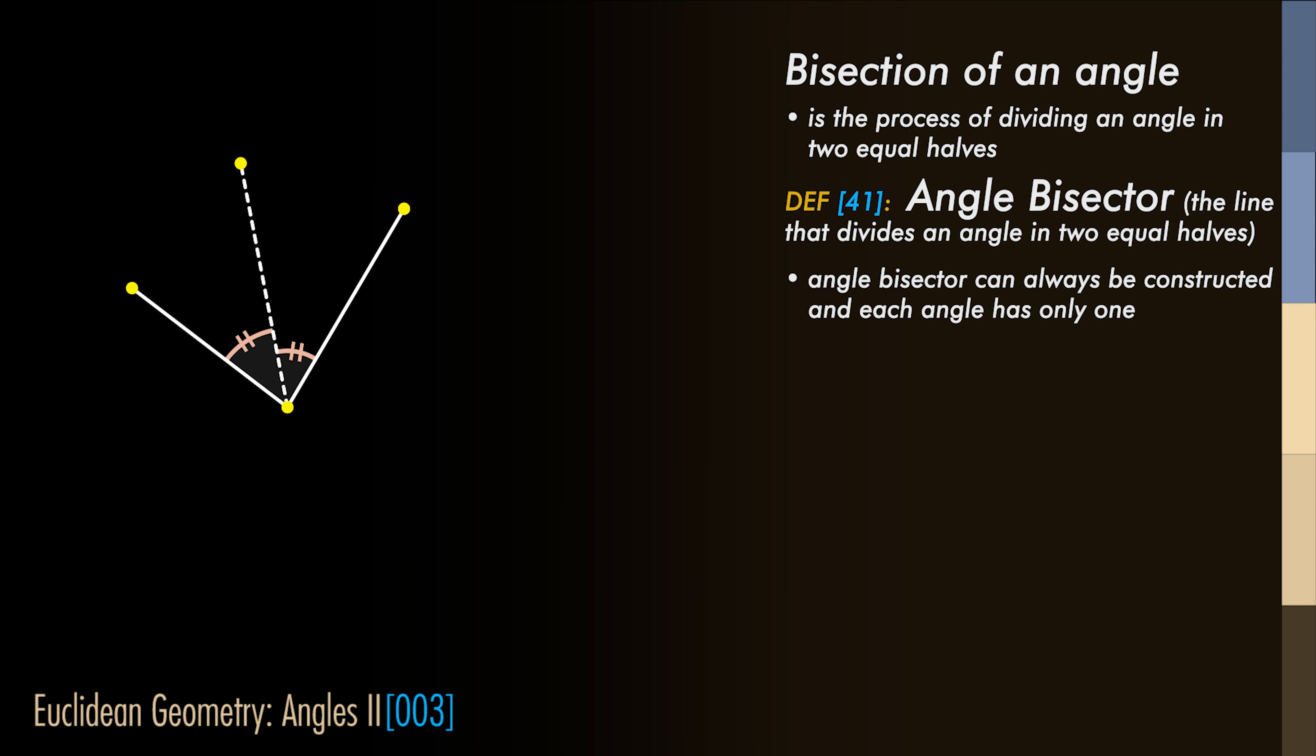By the same reasoning we followed while proving Proposition 1, we can also prove that the bisector can always be constructed, and that there is only one for each angle.